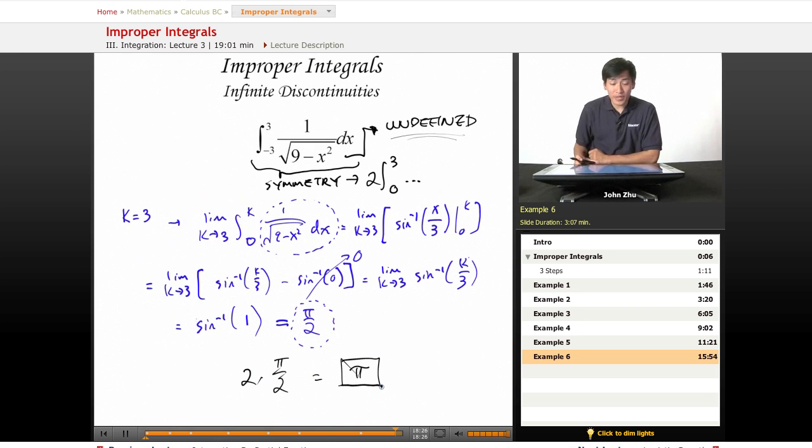Just to recap on improper integrals, we're following the same procedure every single time by making one of the bounds a variable and taking the limit as that variable approaches the bound, 3 in our case, and taking the integral from one bound to another.